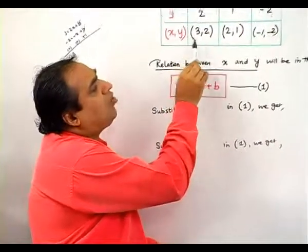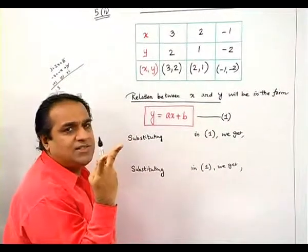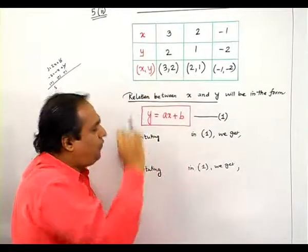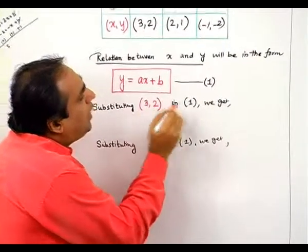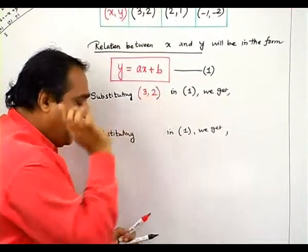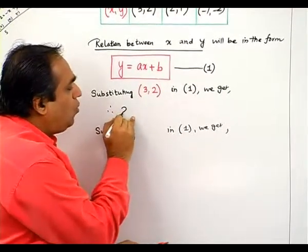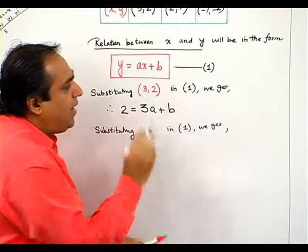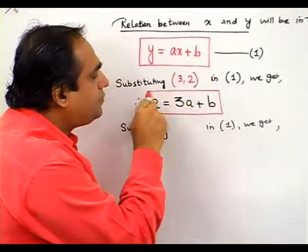Now my dear friends, out of these three points you can take any two points, substitute the values in equation number 1. We are assuming that we are taking the first point, so we write: substituting 3 comma 2 in equation number 1. X is 3, y is 2. Be very careful. Therefore we will get 2 is equal to 3a plus b. This has now become your equation number 2.